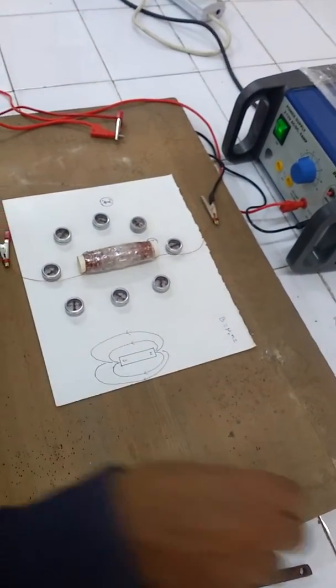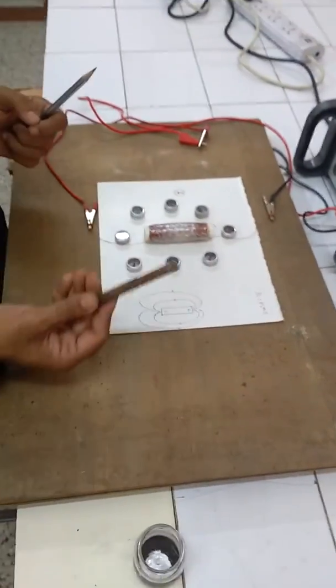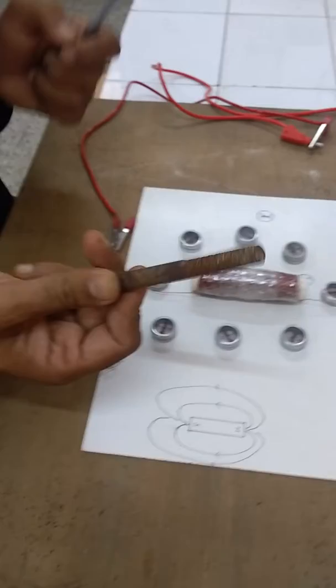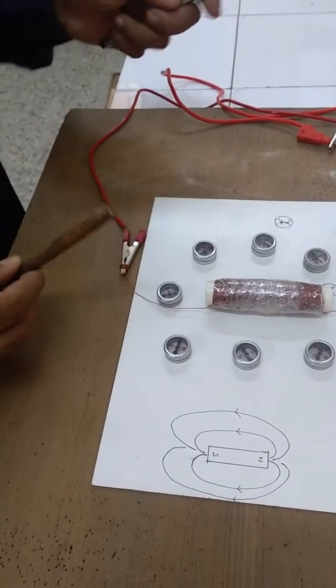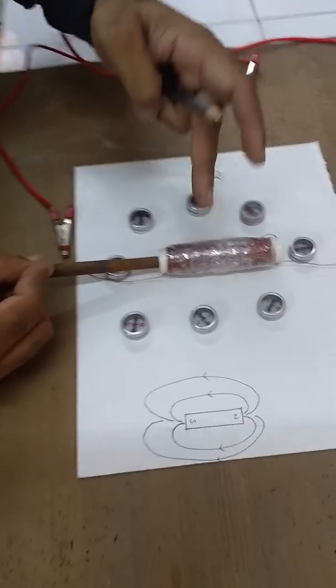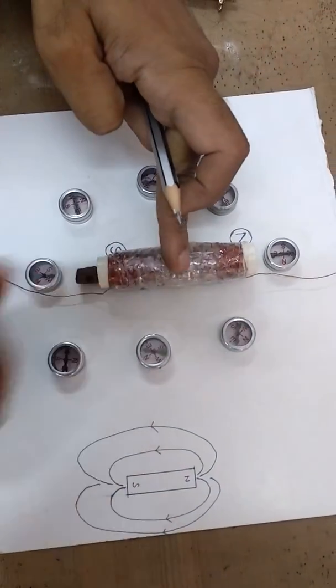Now I'd like to show you something more. See for example, I have taken an iron piece, soft iron, which has very high permeability. When I insert this inside, let us observe what happens.